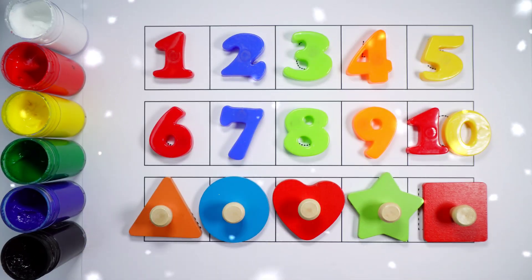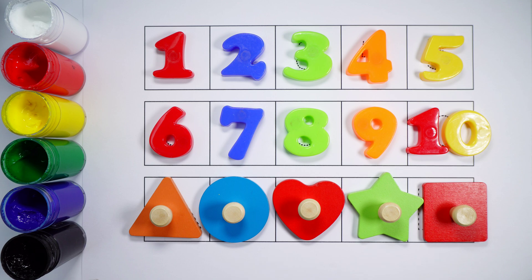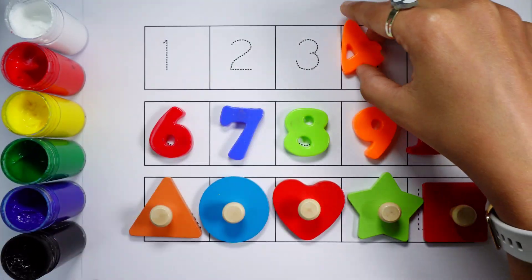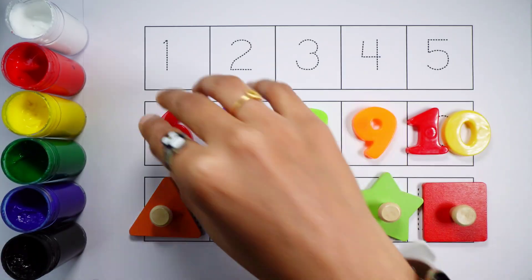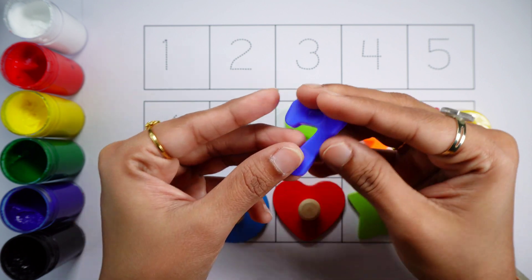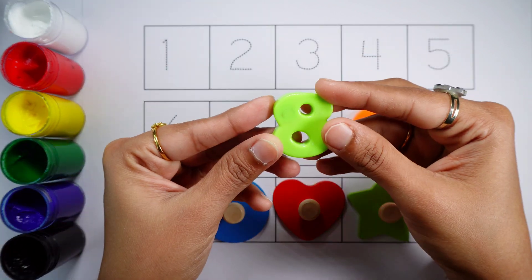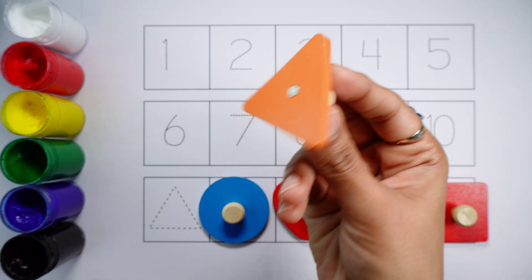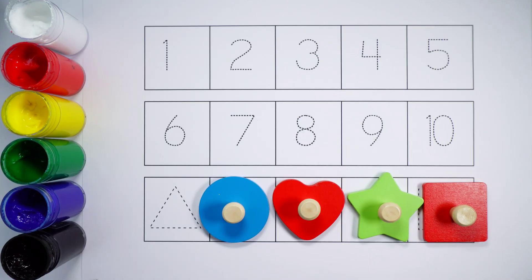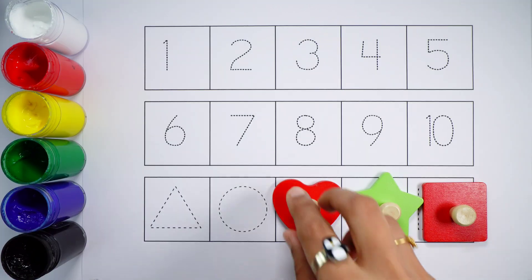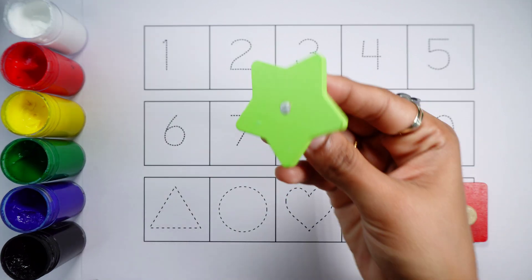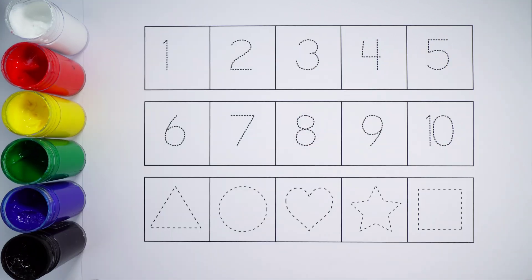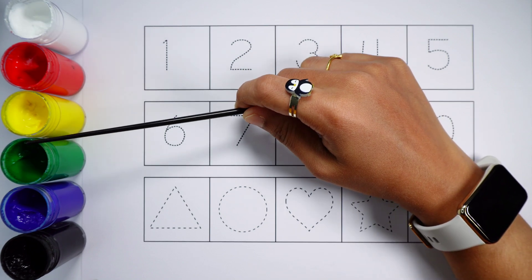Hello kids, let's learn to count some numbers and shapes. Number one, number two, number three, number four, number five, number six, number seven, number eight, number nine, number ten. Triangle, an orange triangle. Circle, a blue circle. Heart, a red heart. Star, a green star. Square, a red square. White color, red color, yellow color, green color, blue color, black color.